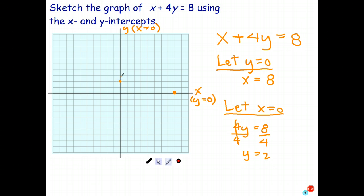So there's our two points. Let's draw the straight line that joins those like so. And let's extend it back in the other direction like so. And there's the graph of x plus 4y equals 8.